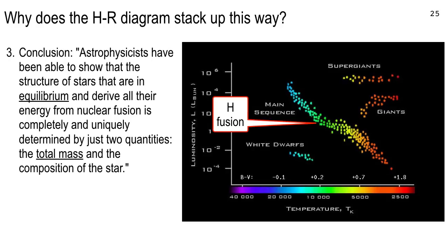Statement three, conclusion — from your textbook: astrophysicists have been able to show that the structure of stars that are in equilibrium and derive all their energy from nuclear fusion is completely and uniquely determined by just two quantities: the total mass and the composition of the star. The composition means maybe a little bit more helium or a little bit more hydrogen than the average, but most stars will have those proportions.